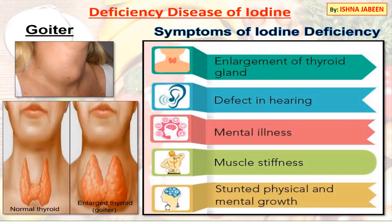Deficiency disease of iodine is goiter, where swelling of the neck appears from enlargement of the thyroid gland. As you can see in the picture, a healthy person has a normal thyroid gland, whereas a person suffering from goiter shows enlargement of the thyroid gland. Symptoms of iodine deficiency include enlargement of the thyroid gland, defects in hearing, mental illness, muscle stiffness, and stunted physical and mental growth.